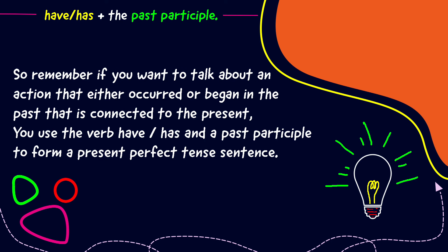So remember, if you want to talk about an action that either occurred or began in the past that is connected to the present, you use the verb have or has and a past participle to form a present perfect tense sentence.